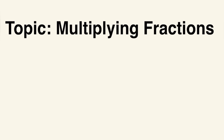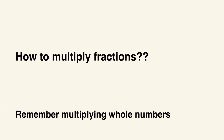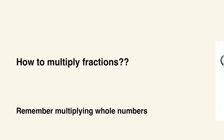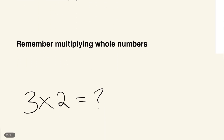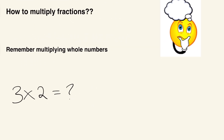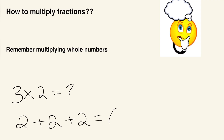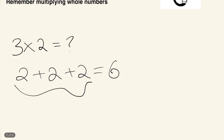In order to know how to multiply fractions, we need to first think about multiplying whole numbers again. How we think when we're multiplying whole numbers is that three times two is basically three groups of two, so we do two plus two plus two which gives us six.